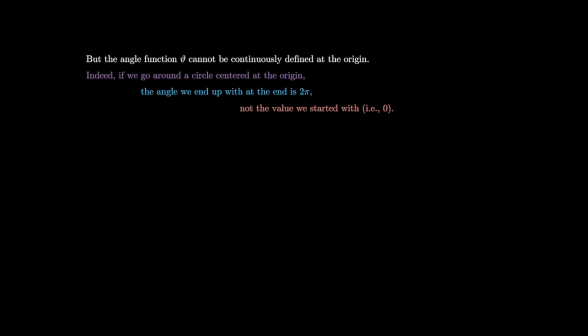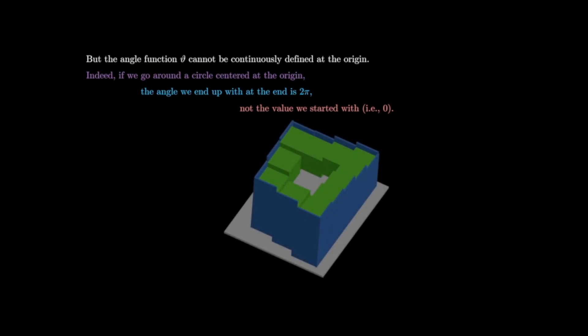But the angle function θ cannot be continuously defined at the origin. If we go around a circle centered at the origin, the angle we end up with after going all the way around is 2π, not the value we started with — namely zero. One can get a very explicit idea of what's going on here by looking at M.C. Escher's picture of the staircase: the staircase appears to be increasing, but if you go the full way around you don't end up any further than where you started.